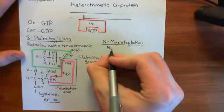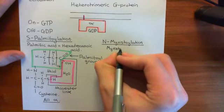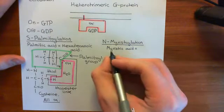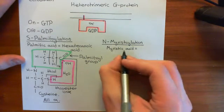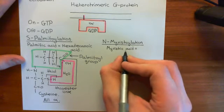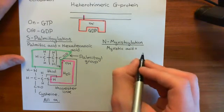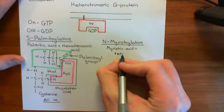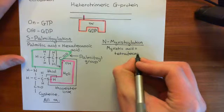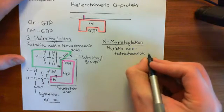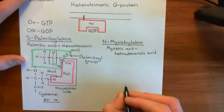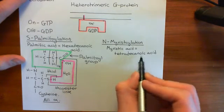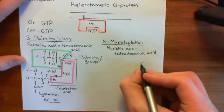What is myristic acid? It's a simple molecule - its old name is myristic acid, but its systematic new name is tetradecanoic acid, and that tells us exactly what it is. It's almost identical to palmitic acid - we're dealing with a 14-carbon, fully saturated carboxylic acid.